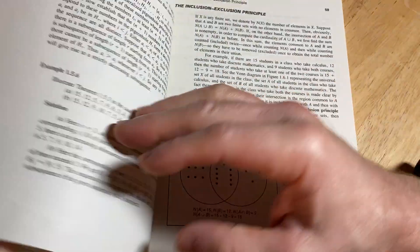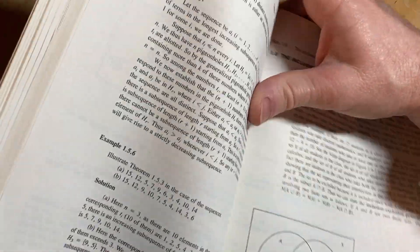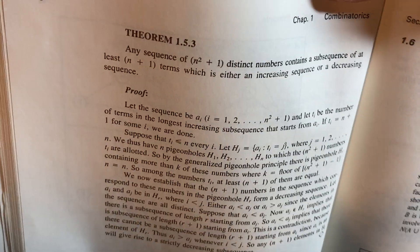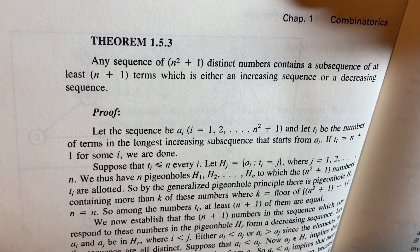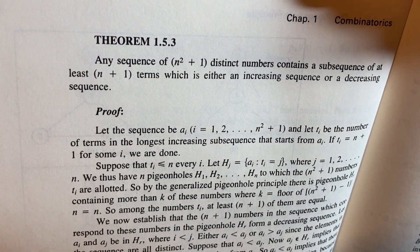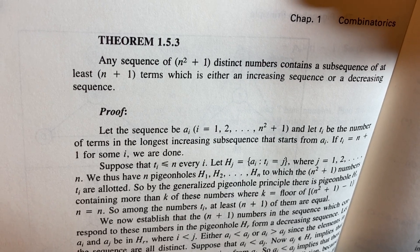So these theorems are due to Paul Erdős. I don't know if that's Paul Erdős's proof, but that's pretty cool. Here's another theorem due to Paul Erdős. Any sequence of N squared plus 1 distinct numbers contains a subsequence of at least N plus 1 terms, which is either an increasing sequence or a decreasing sequence.